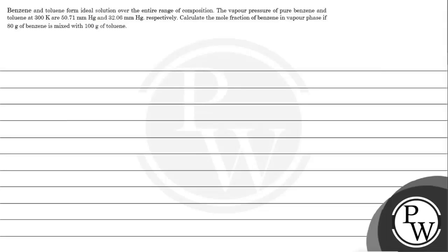Hello, so let's read this question. Benzene and toluene form ideal solution over the entire range of composition. The vapor pressure of pure benzene and toluene at 300 Kelvin are 50.71 mmHg and 32.06 mmHg respectively. Calculate the mole fraction of benzene in vapor phase if 80 grams of benzene is mixed with 100 grams of toluene.